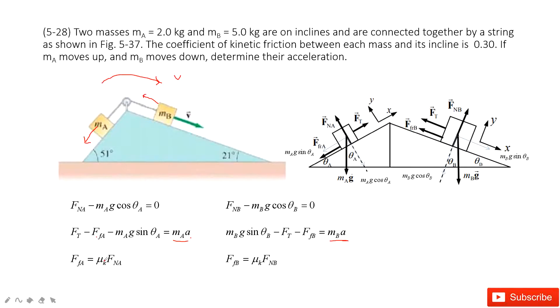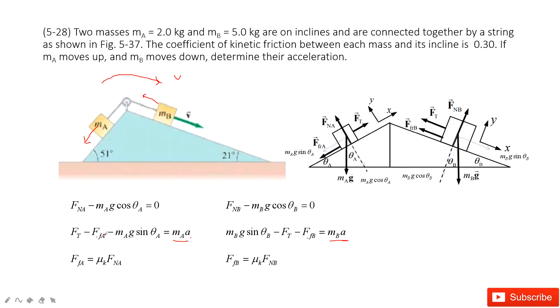So the friction for this one is mu k m_a g cos theta. And then the friction for B is mu k m_b g cos theta. And then we can solve the equation to find the tension and acceleration.